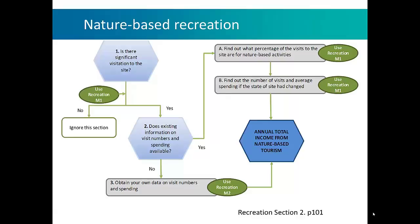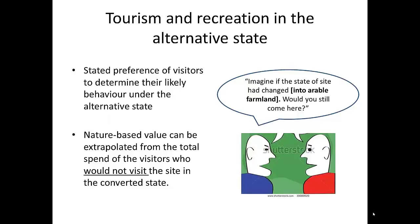The final service is nature-based recreation, focused on questionnaires asking visitors to a site about their reasons for visiting and getting travel cost information. To evaluate the value of the site under an alternative state for its nature-based recreation, they ask for the stated preference of visitors to determine whether they would return if the site was under some alternative land use. By looking at the difference in number of visitors and average spend between those who would remain visiting and those who wouldn't, the net value of the site for nature-based recreation can be assessed.